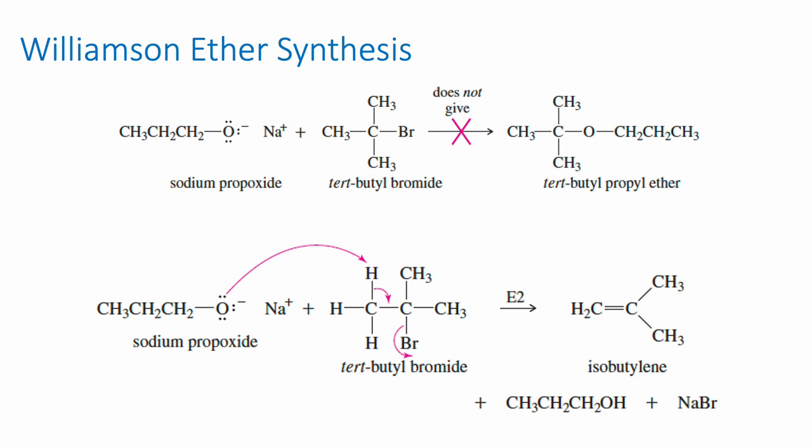If we want to make tert-butyl propyl ether, we just have to swap the oxygen and the bromine. An ether has two halves — the tert-butyl on one side of the oxygen and the propyl on the other. That propyl group's alkoxide is actually primary, so if we make tert-butoxide the nucleophile and propyl bromide the electrophile, we'd have a primary substrate and get a good yield of the ether.